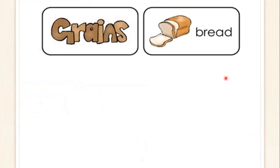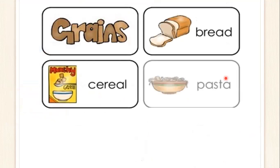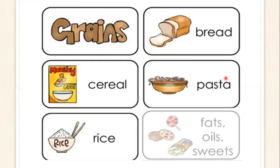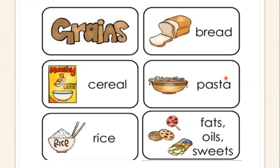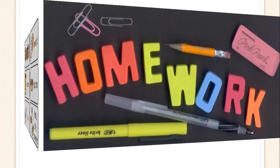Grains like bread, cereal, pasta, and rice. Also, we have fats, oils, and sweets. Fats and oils vienen a ser lo que es grasas y aceites, que también forman parte de una dieta alimenticia.